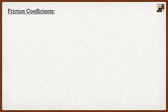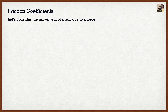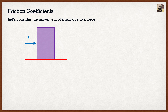We measure this using friction coefficients — this is where the actual analysis of friction starts to come into play. Let's consider the movement of a box due to a force. I have a box resting on a surface, and I want to push it with force P. The weight of the box holds it downward on the surface. We're going to have a frictional force that counteracts the motion, acting to the left. We also have a normal force, which is proportional to the weight of the box.